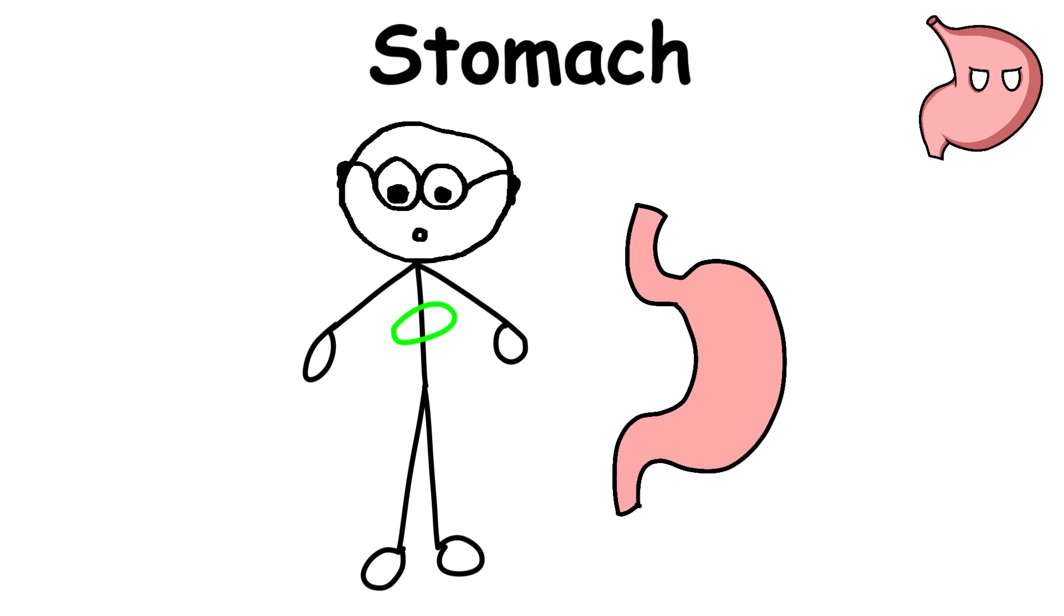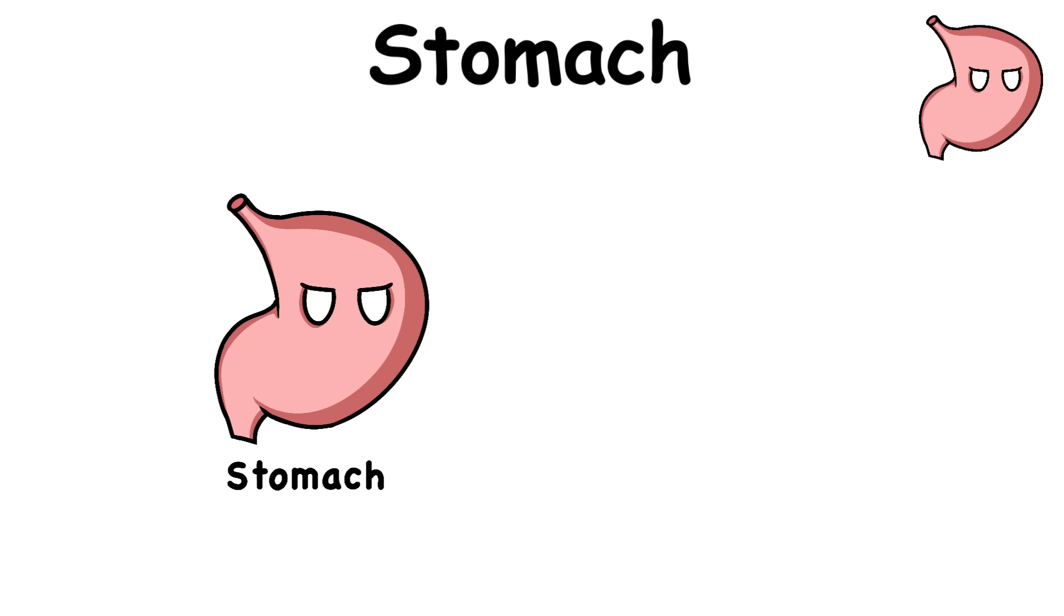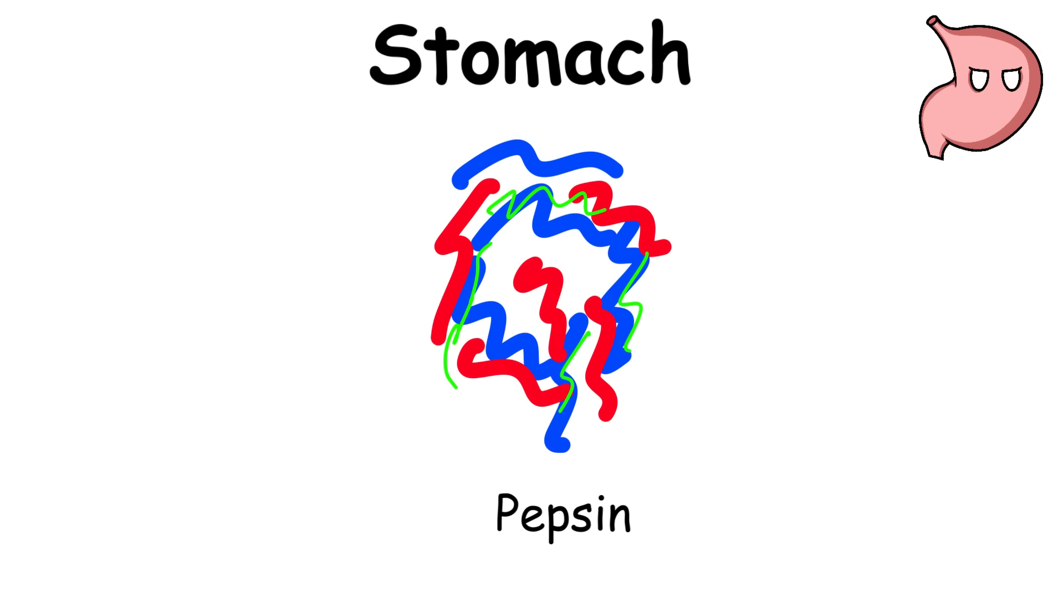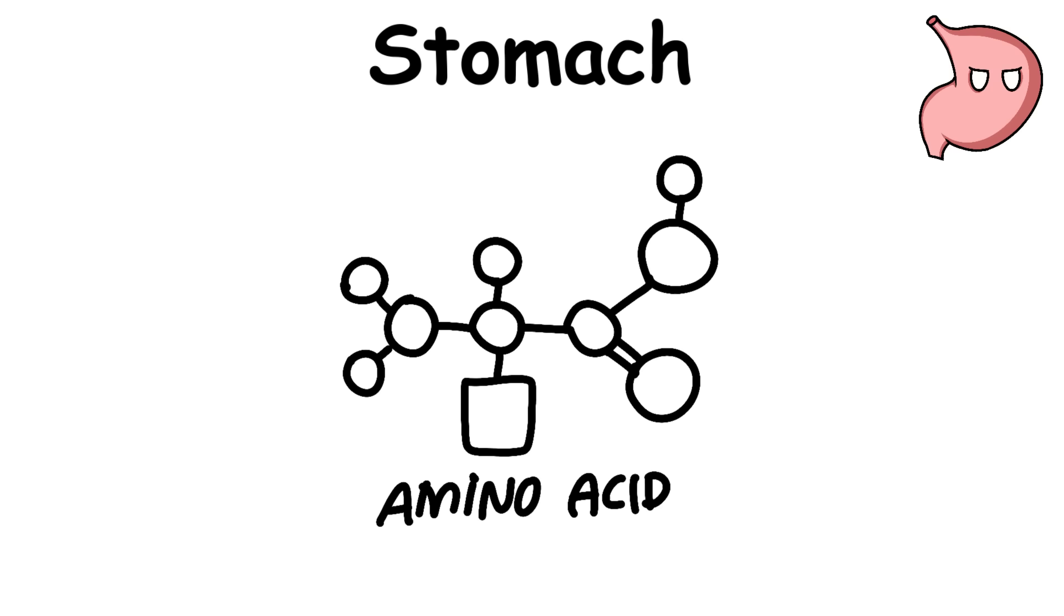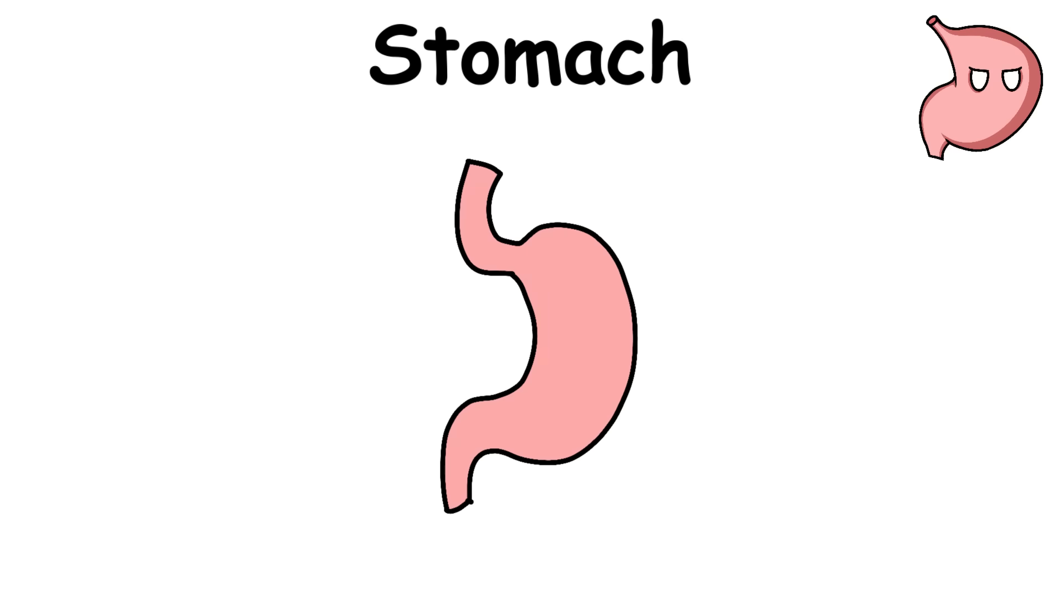The stomach is an organ at the top of the abdomen responsible for breaking down and digesting food. Within the stomach are enzymes that digest food. An example is pepsin, which breaks down proteins and converts them into amino acids, which are the building blocks of the proteins that the body produces.